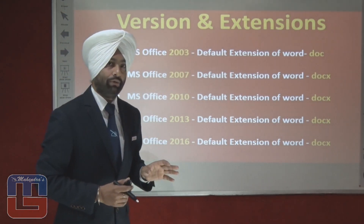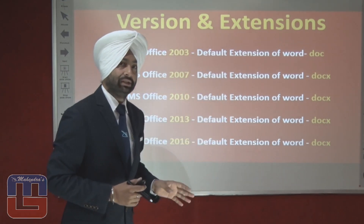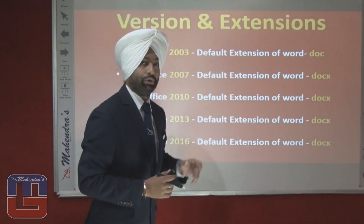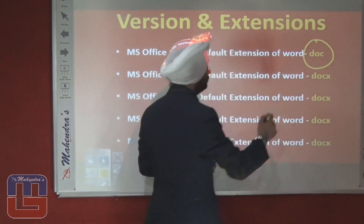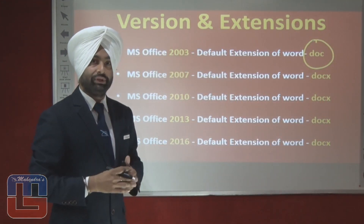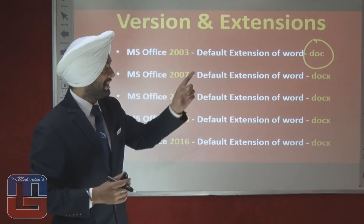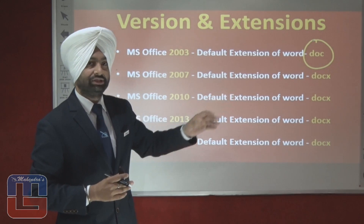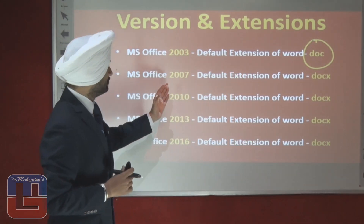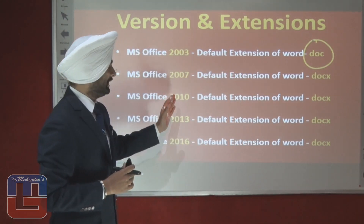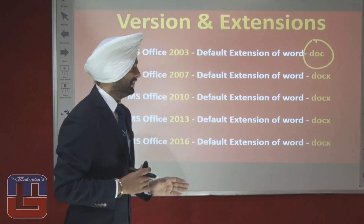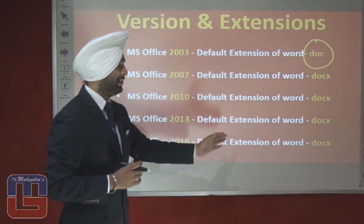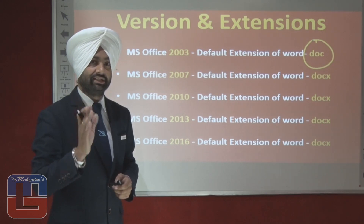Now let's look at the versions and extensions of MS Word. MS Word 2003 had the default extension DOC. Versions before 2007 have the default extension DOC. Versions from 2007 onwards — including 2007, 2010, 2013, and 2016 — all have the default extension DOCX. These extensions are very, very important, as questions often appear about extensions of Word, Excel, and PowerPoint.